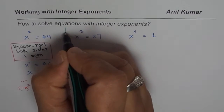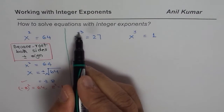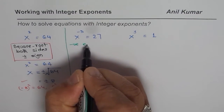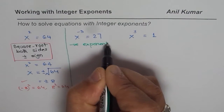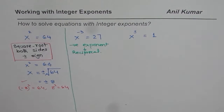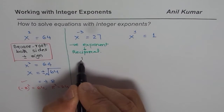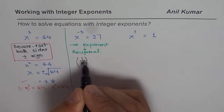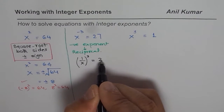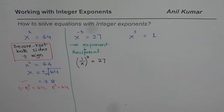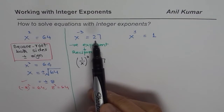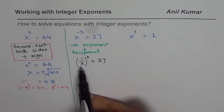Now let us look at the next equation: x to the power of minus 3 equals 27. A negative exponent leads to a reciprocal. So the equation x to the power of minus 3 can be written as 1 over x to the power of 3. We can rewrite this equation as 1 over x cubed equals 27. You could also write 1 over x equals 1 over 27, but we will follow this method.